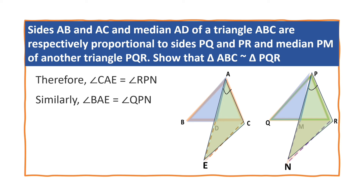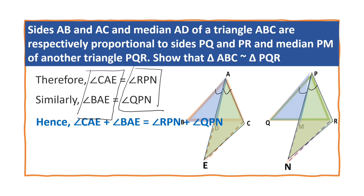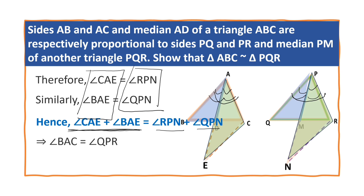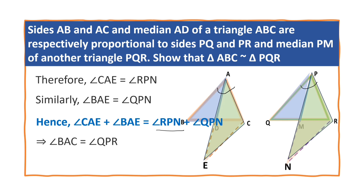Similarly, angle BAE is equal to angle QPN. Adding the left-hand sides and right-hand sides: angle CAE plus angle BAE equals angle RPN plus angle QPN. Adding these two pairs gives angle A on the left and angle P on the right. Therefore, angle BAC is equal to angle QPR, that is, angle A is equal to angle P. Let this be equation 3.